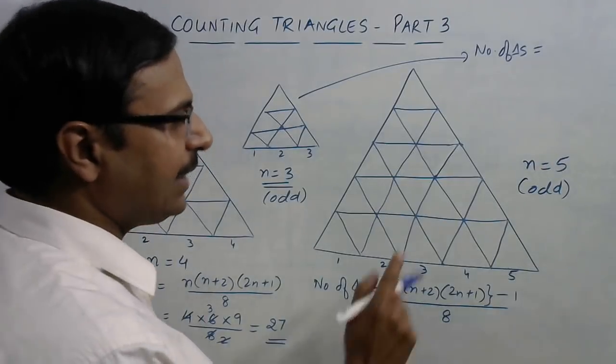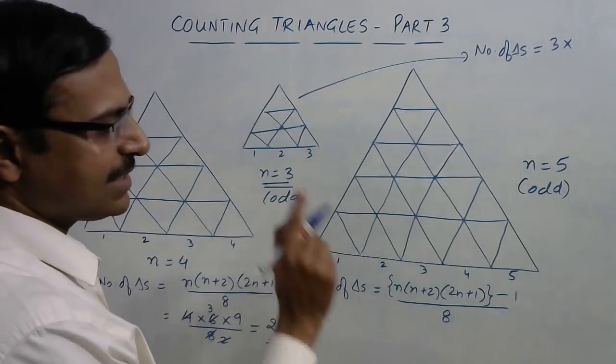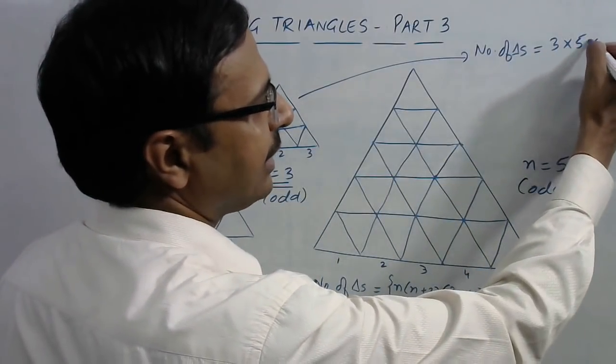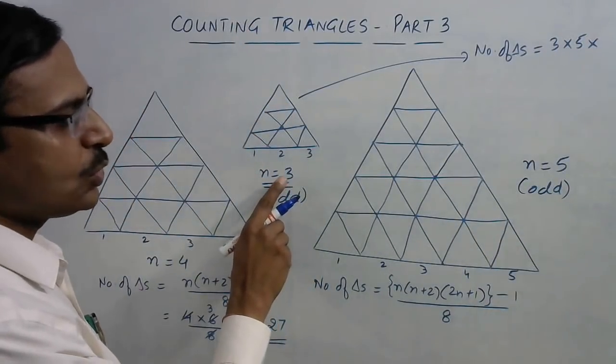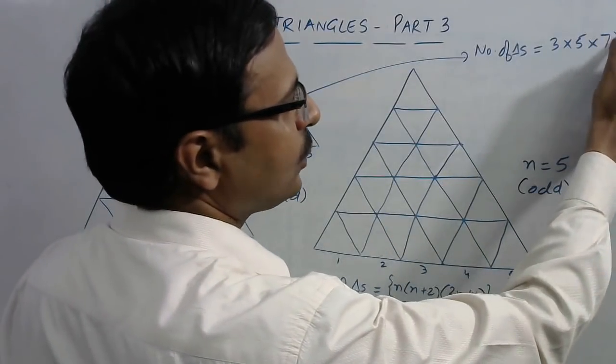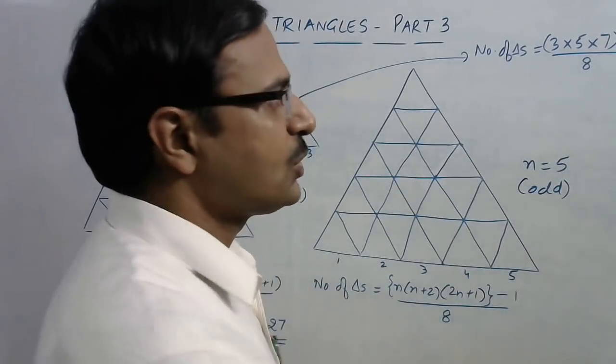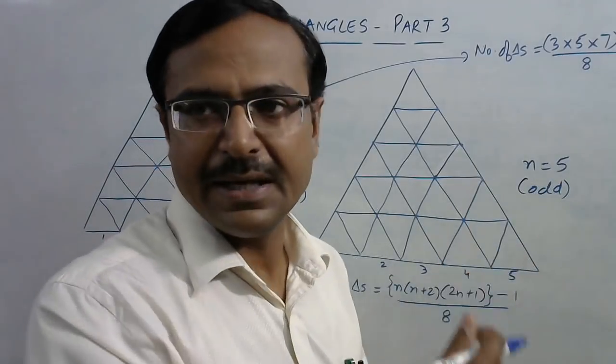Number of triangles will be equal to - just write n, n is three, so 3×(n+2), that is 3+2=5, and then we have 2n+1, two into n is three, into two is six, plus one is seven, and you need to subtract one from this and then divide it by eight.